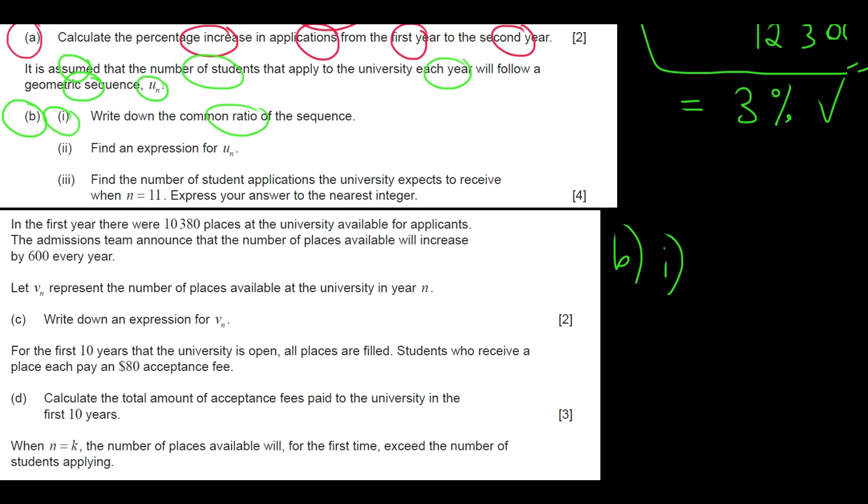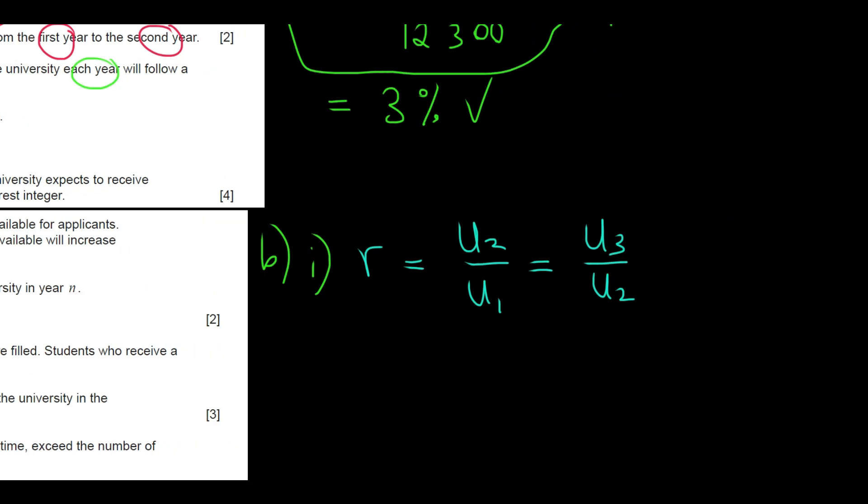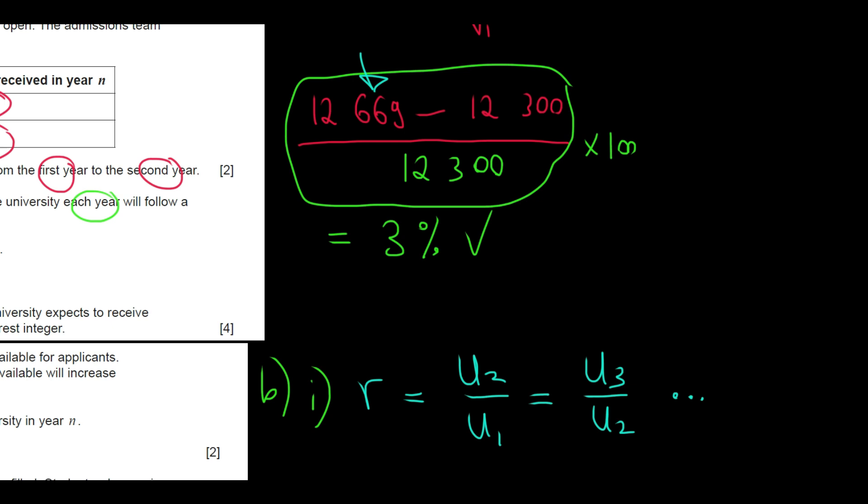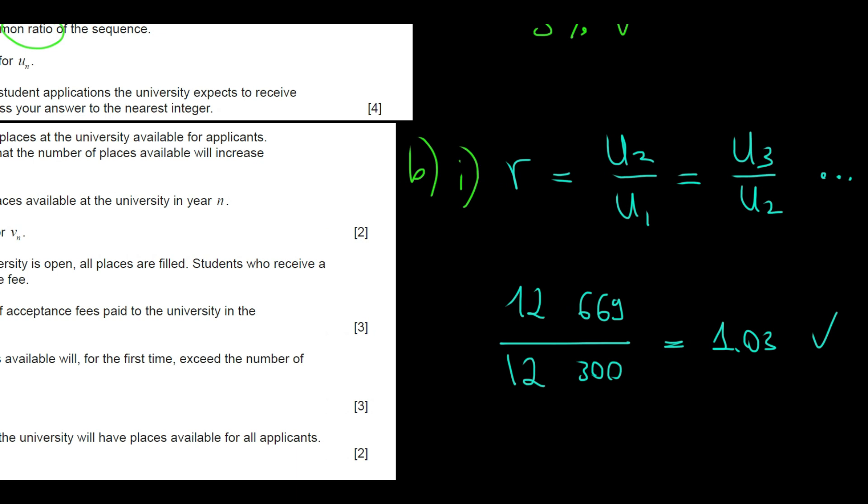so for the common ratio, we have the following formula for a geometric sequence. Second term divided by the first term or third term divided by the second term. And the list keeps going. As long as you have two consecutive terms, you just take the ratio between them. In this case, the second term was 12,669. And the first term was 12,300. This equals to 1.03. So the answer is 1.03. Let's continue.